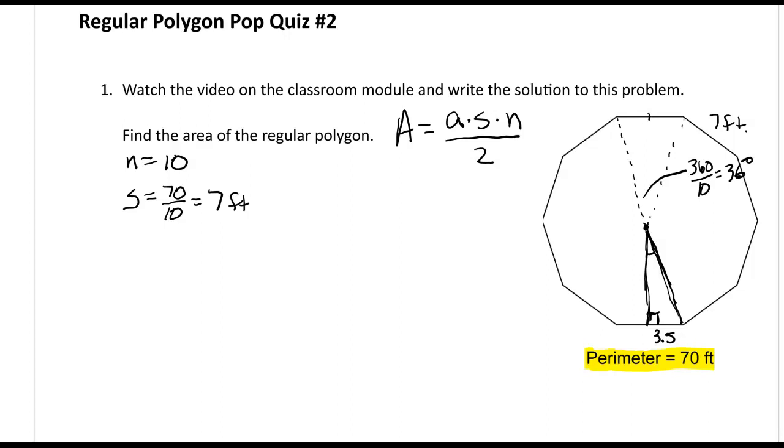So each one of these is going to be 360 divided by 10, which is going to be 36 degrees. So now, this angle here, I'll draw in this other radius, this angle here is going to be half of that 36. So that's going to be 36 divided by 2, or 18 degrees.